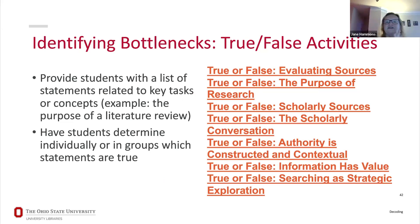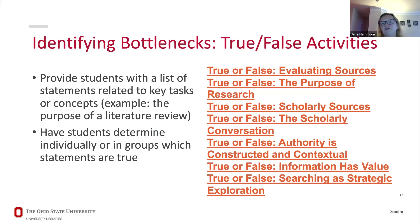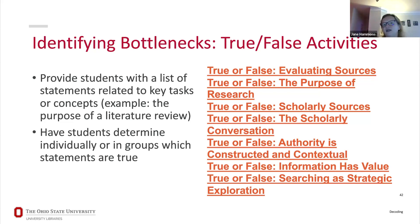For identifying bottlenecks, simple activities like true-false questions can be really helpful for surfacing misconceptions. If students are doing a literature review assignment, do a few true-false questions about what the purpose of a literature review is — you might find out they weren't familiar with the term 'literature' in the scholarly sense and were thinking about novels. Quick activities like this help you identify misconceptions or gaps in knowledge you might want to address.